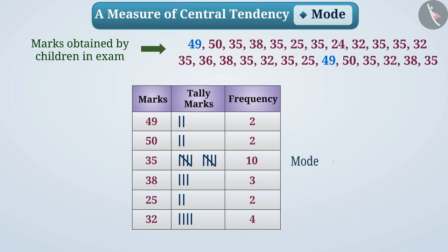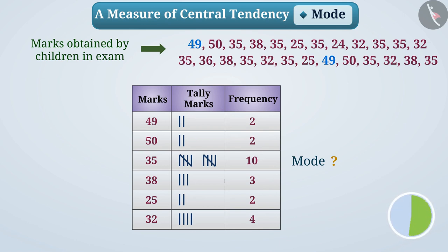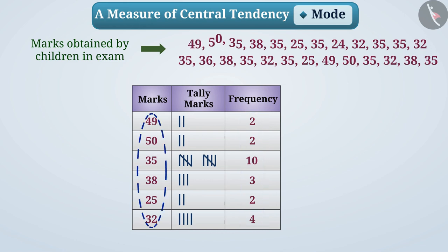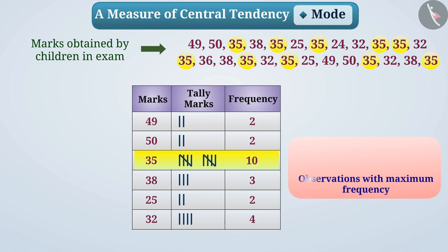Can we identify a mode based on frequency? The frequency of an observation tells us how many times it has occurred in all the observations. The observation with the highest frequency will be the most frequent in the group, i.e., the most prevalent. Therefore, the observation with maximum frequency can be called the mode.